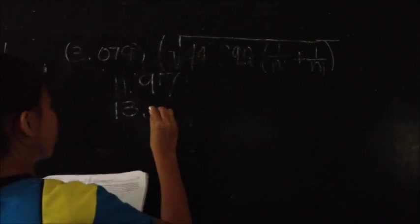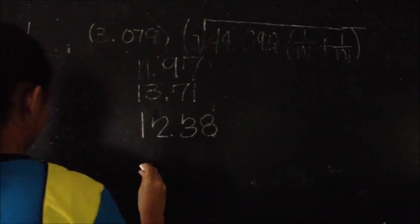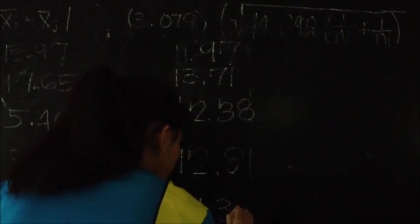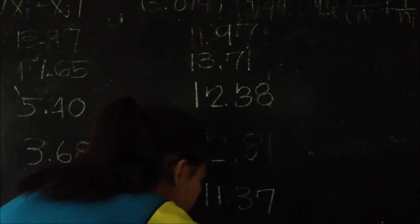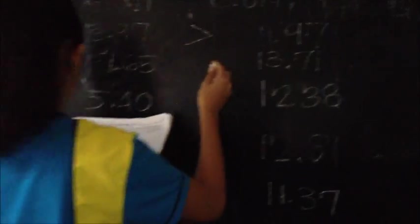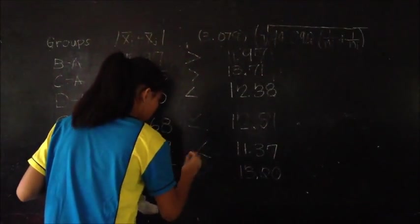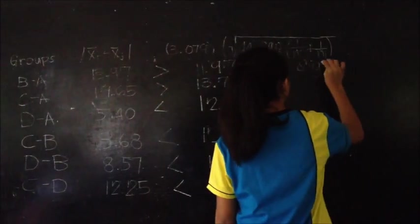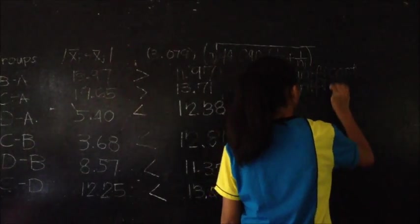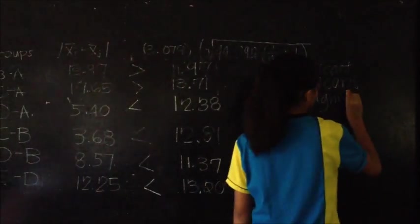The S values of the pairs are calculated. Pair B and A has an S value of 11.97, Pair C and A has an S value of 13.71, while Pair D and A has an S value of 12.38. C and B has an S value of 12.81, Pair D and B has an S value of 11.37, and C and D has an S value of 13.20.